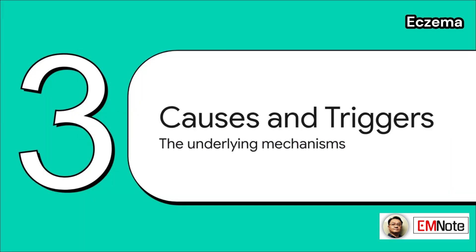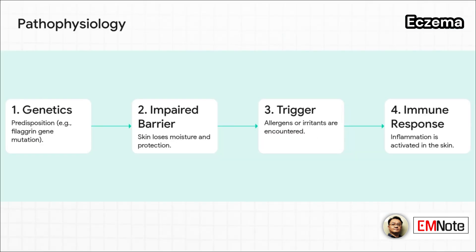Now what's happening on a deeper level? Let's review the underlying pathophysiology and the factors that commonly trigger flare-ups. The development of eczema generally follows this sequence: it starts with a genetic predisposition, like a mutation in the filaggrin gene, which is essential for skin barrier integrity. This leads to an impaired barrier, which makes the skin vulnerable to environmental triggers. Once exposed, those triggers set off an inflammatory immune response.